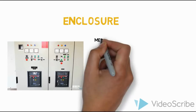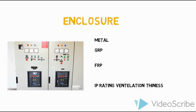Next are Enclosures. Types include metal enclosure, GRP (Glass Reinforced Plastic), and FRP (Fiber Reinforced Plastic). IP rating and ventilation are based on the enclosure type. If you want to use a low voltage switch panel, you can use a DAPA enclosure.